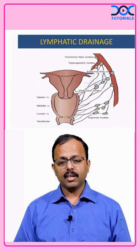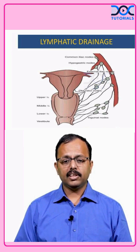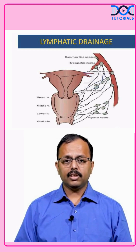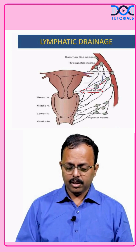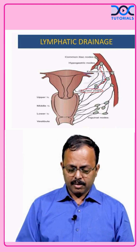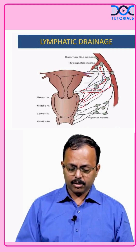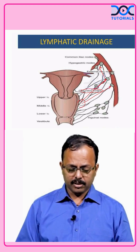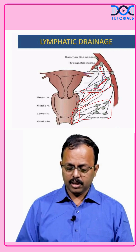The lymphatic drainage of the vagina depends on whether we are referring to the upper third, middle third, lower third, or the vestibule. The upper third normally drains to the obturator nodes, then on to the external iliac and common iliac group of lymph nodes. The middle third can drain directly to the external iliac nodes or to the obturator nodes and then the common iliac nodes.